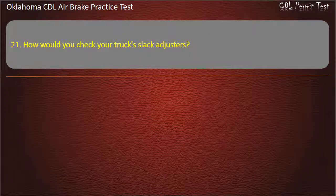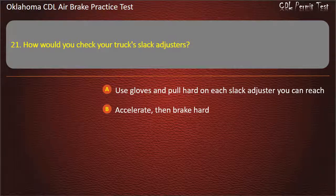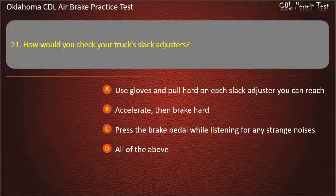Question 21. How would you check your truck's slack adjusters? Use gloves and pull hard on each slack adjuster you can reach; accelerate, then brake hard; press the brake pedal while listening for any strange noises; or all of the above. Answer: Use gloves and pull hard on each slack adjuster you can reach.